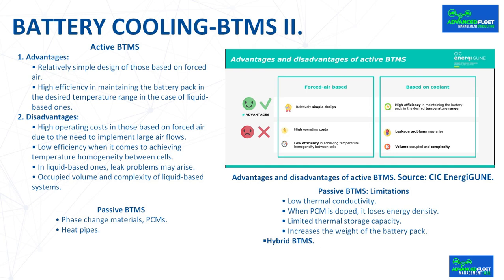A second passive alternative is heat pipes — vacuum tubes filled with a fluid, normally water, that operate using the liquid-vapor phase change. A heat pipe is composed of three sections: an evaporator area in contact with the hot focus (cell), an adiabatic section through which the steam circulates, and a condenser area in contact with the cold focus (exterior of the battery pack). Although not yet used in battery packs, their use in cooling electronic components is widespread. Key characteristics are flexible geometry, high thermal conductivity — practically double that of conductive solids — and practically zero maintenance. The main limitations are complexity and cost.